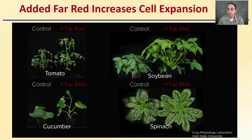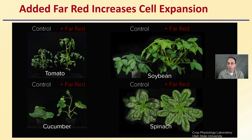Added Far Red light can increase cell expansion. Looking at control versus Far Red for tomatoes, soybeans, cucumbers, and spinach — the difference in morphology is stark. We can clearly see an overall increase in plant height when Far Red is added.